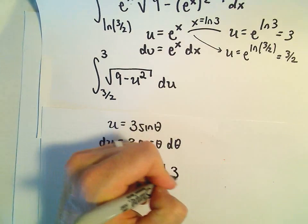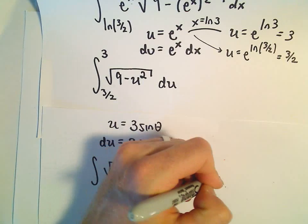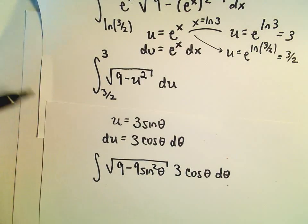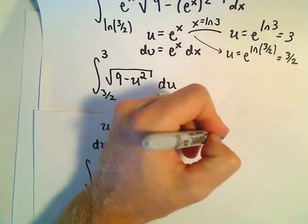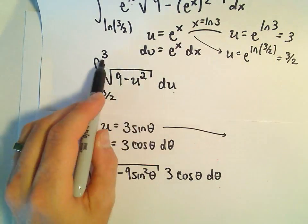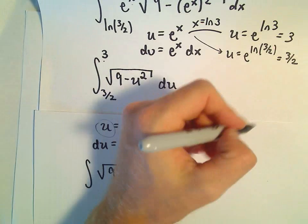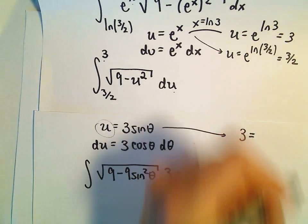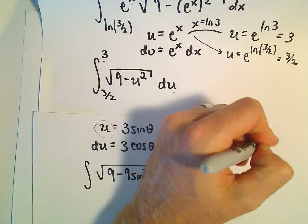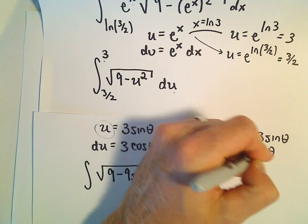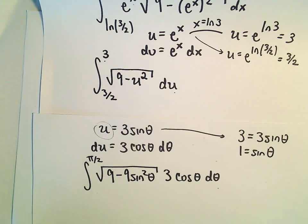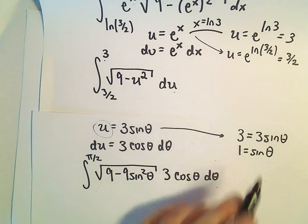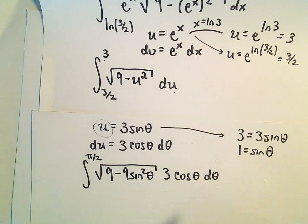du will be 3 cosine theta d theta. Since this is a definite integral, we can figure out our new limits of integration. The upper limit was when u equals 3, so we get 3 equals 3 sine theta, or 1 equals sine theta. Sine of pi over 2 is what equals 1 on the interval negative pi over 2 to pi over 2.